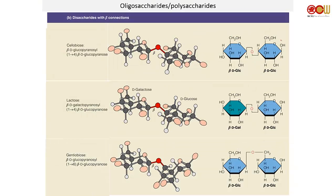There are many disaccharides common in nature that have a beta linkage. For example, cellobiose is a component of cellulose — we'll see cellulose today as one of the most abundant polymers in nature. You also have lactose, the sugar found in milk, and gentibiose. In all cases, you have the beta anomer, so the OH is pointing up.